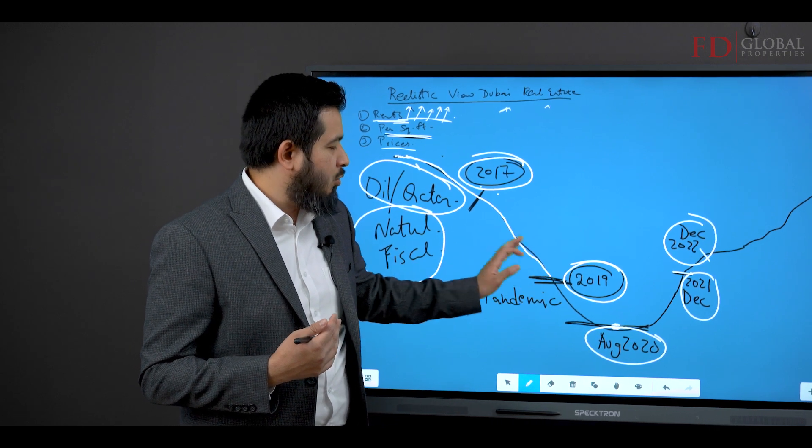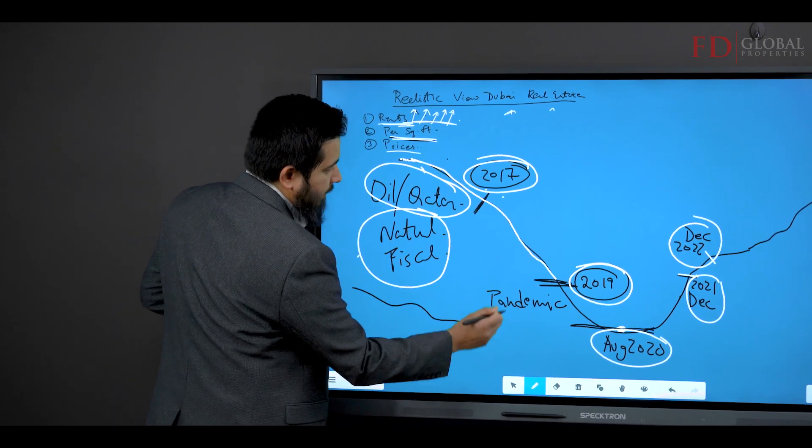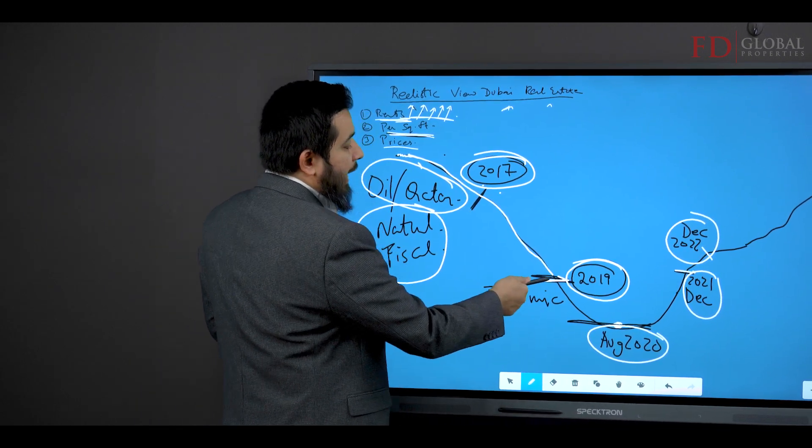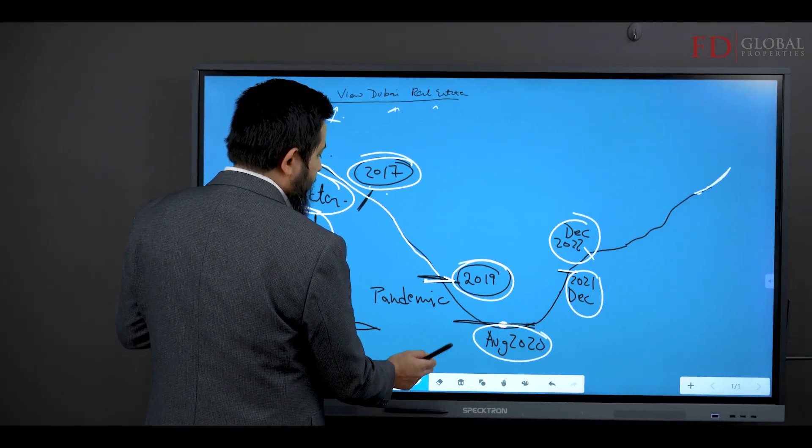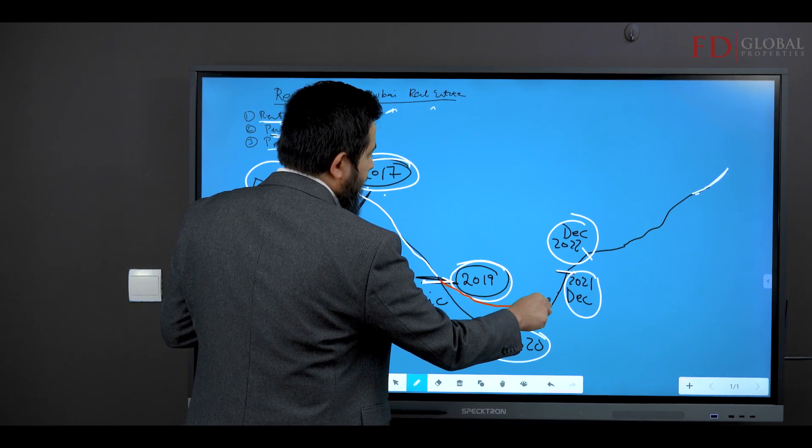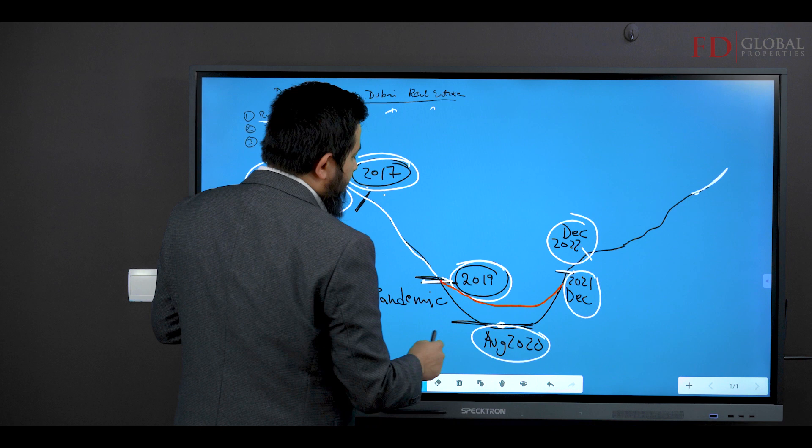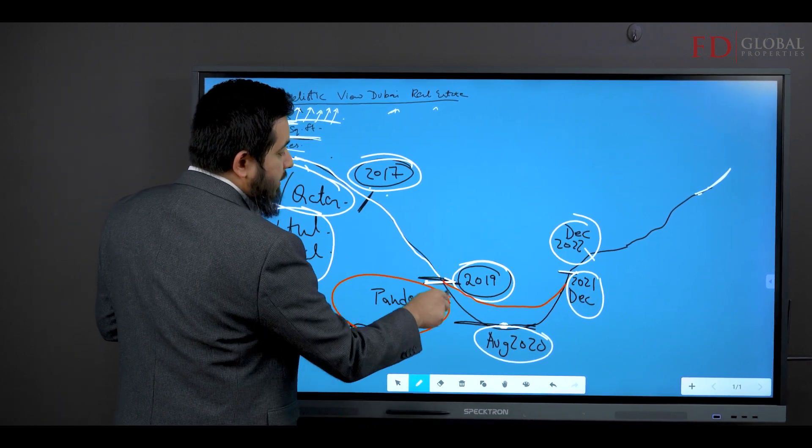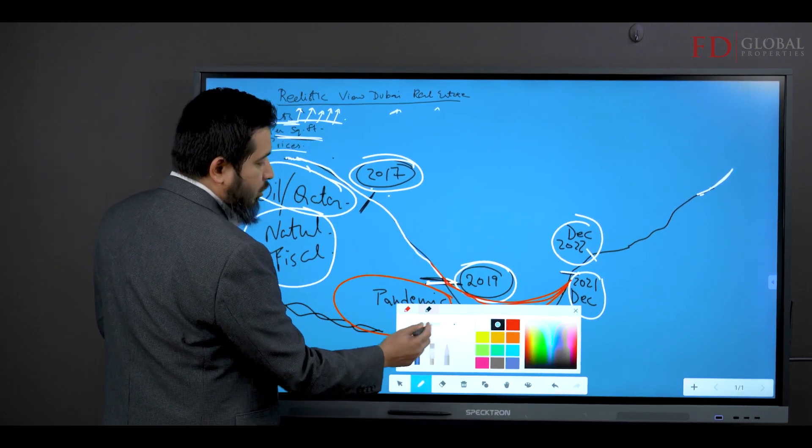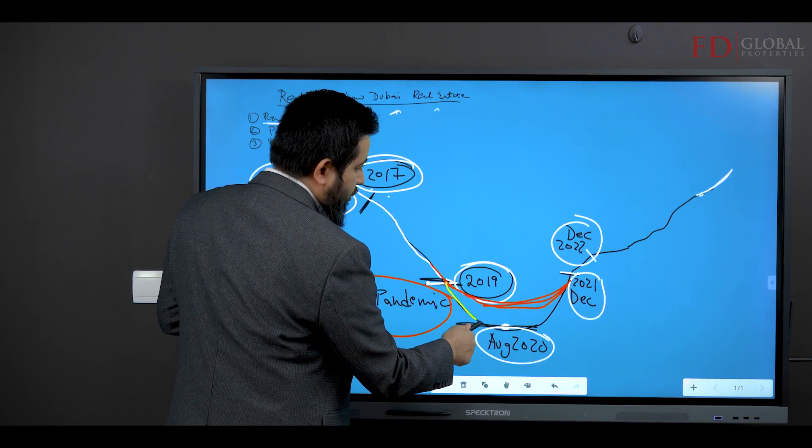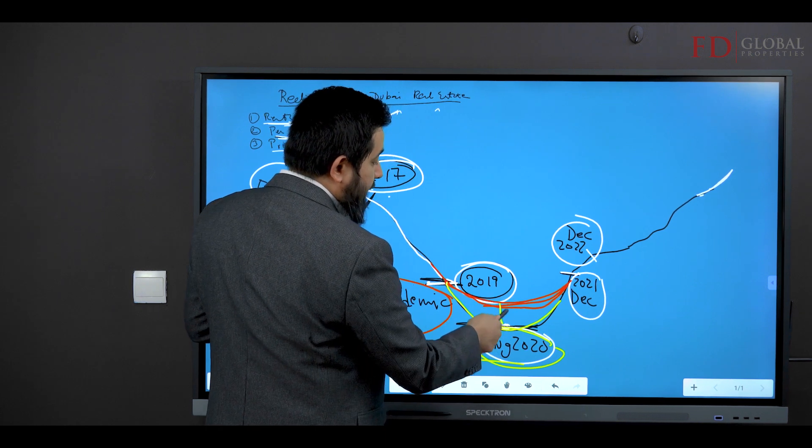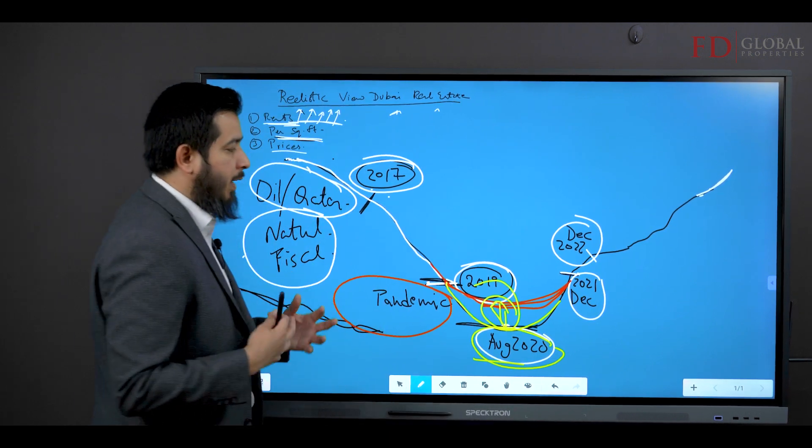The prices were not going downwards so dramatically. But 2019, ideally speaking, would have been the bottoming out. You would have seen the prices bottom out like this and then start going up. But then we had the weird pandemic. So instead of these prices going back up, we had this extra, extra dip where by August 2020, we had this extreme dip because of the global pandemic.